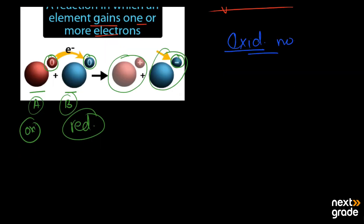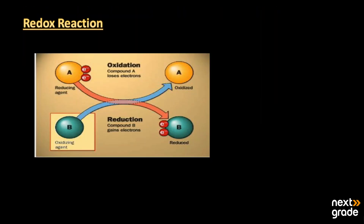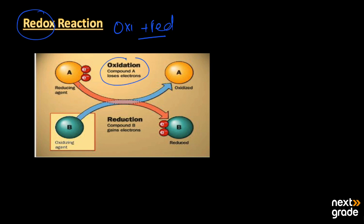When we combine oxidation and reduction together, this is known as a redox reaction. In a redox reaction, compound A loses electrons and undergoes oxidation, forming a new product A⁺, while reactant B gains those electrons and gets reduced, forming a new product B⁻. So a redox reaction is simply oxidation plus reduction occurring simultaneously.